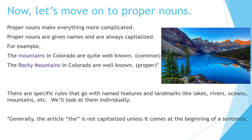Now let's move on to proper nouns. Proper nouns make everything more complicated. Proper nouns are given names and are always capitalized. For example, the mountains in Colorado are quite well known — common noun. The Rocky Mountains in Colorado are well known — proper noun. There are specific rules that go with named features and landmarks like lakes, rivers, oceans, mountains, etc. We'll look at them individually. Generally, the article THE is not capitalized unless it comes at the beginning of a sentence.